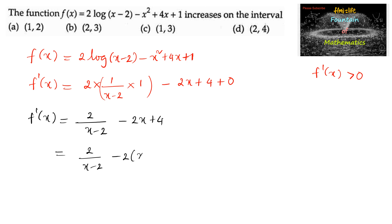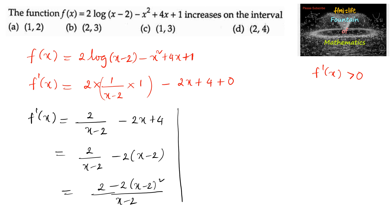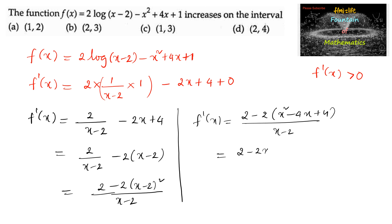We can also write this as 2 upon (x minus 2) minus 2 times (x minus 2), or equivalently 2 minus 2 times (x minus 2) squared, all divided by (x minus 2). On simplifying, f'(x) equals 2 minus 2 times (x squared minus 4x plus 4) upon (x minus 2), which gives 2 minus 2x squared plus 8x minus 8.